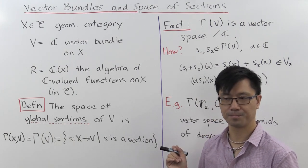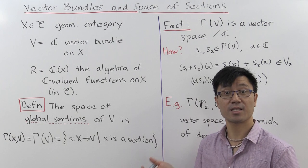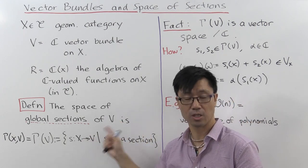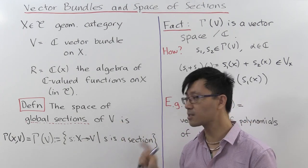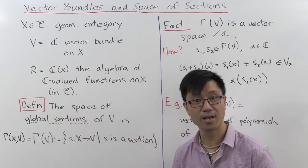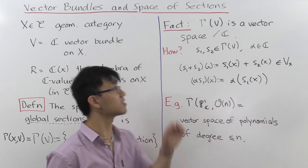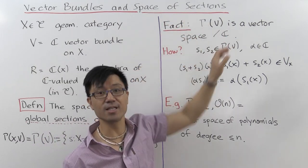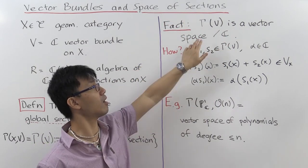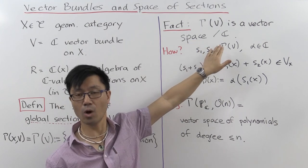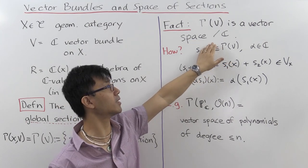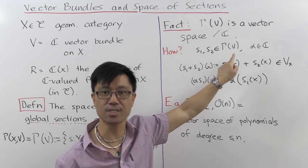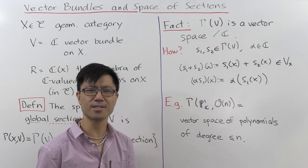Now what do we know about the set of functions on some space? The first thing is it's a vector space. Since these sections generalize functions, we can ask if the same is true of this set. And in fact, that's the case. Gamma(V) is actually a vector space — a vector space over what? Well, in this case we're looking at complex vector bundles, so they're vector spaces over C.